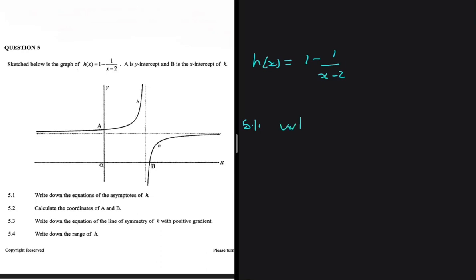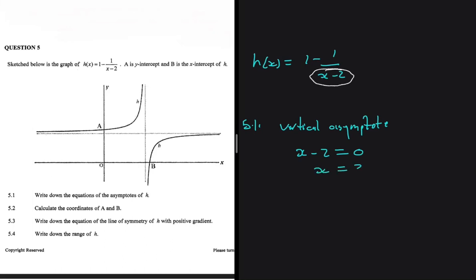Let's start with the vertical asymptote. The vertical asymptote comes from the denominator part of the equation. We know we cannot divide by 0, so if we set x minus 2 equals to 0, we will find the vertical asymptote — the x value the graph is never allowed to touch, because touching that point means dividing by 0, which is not allowed.